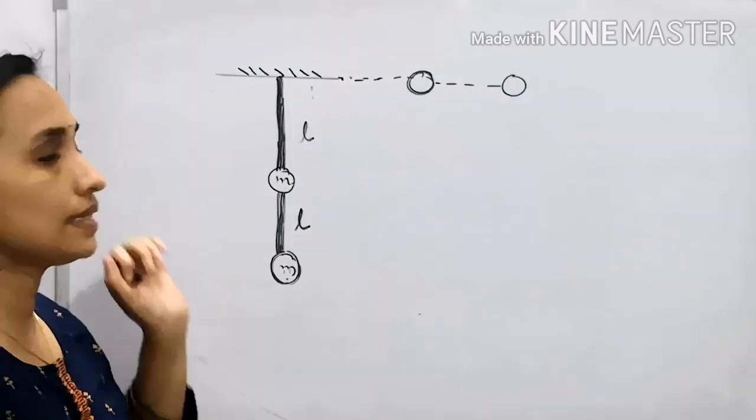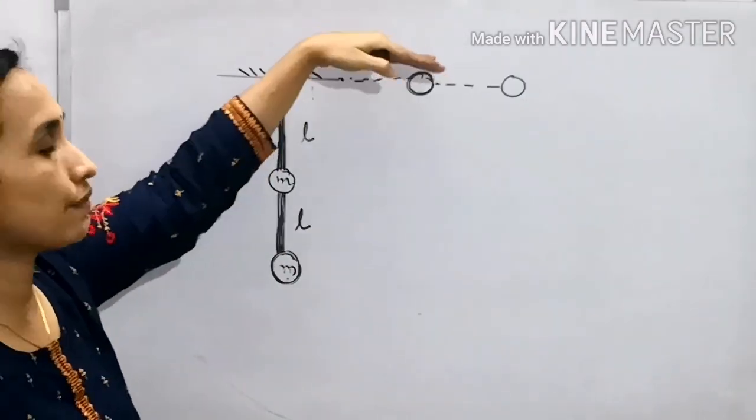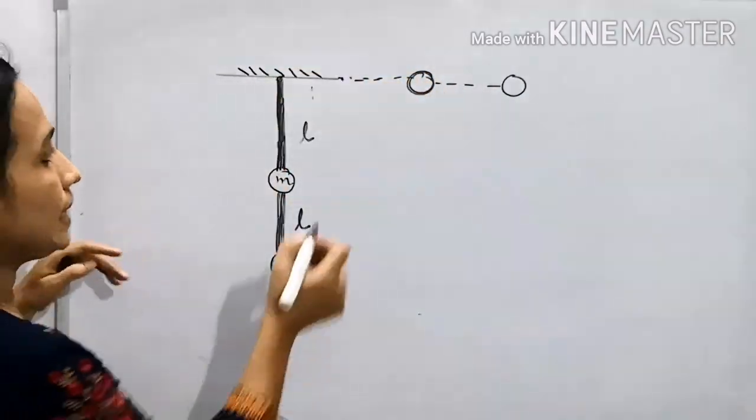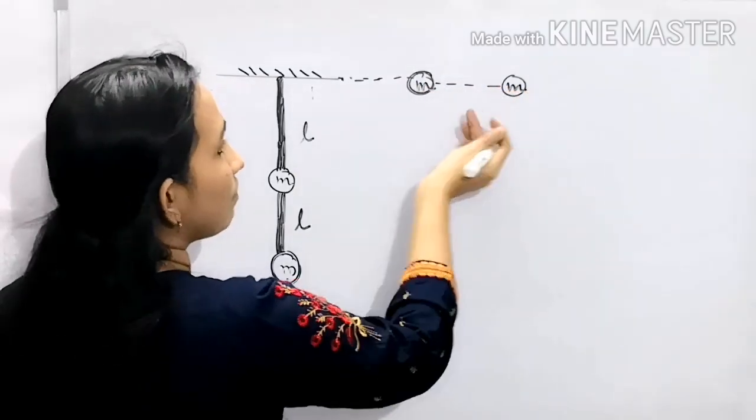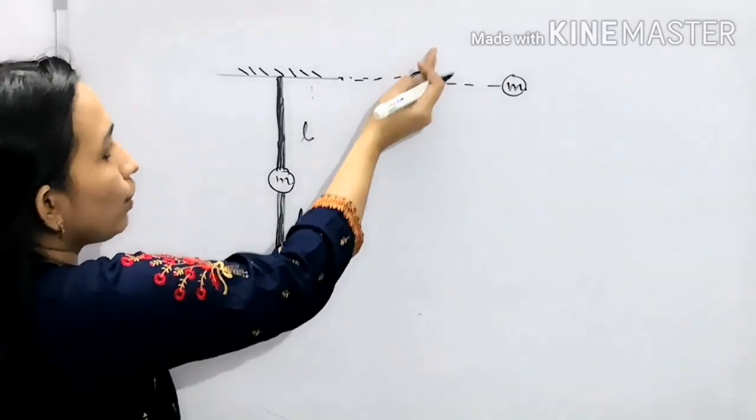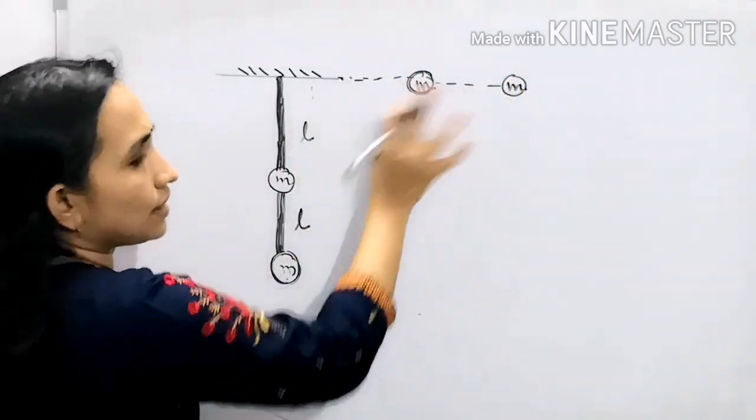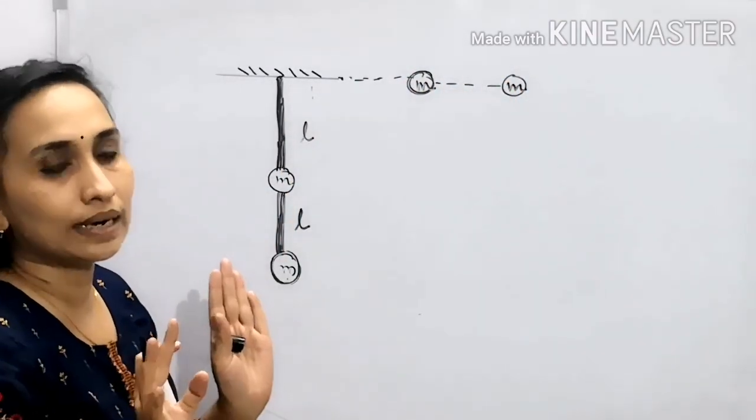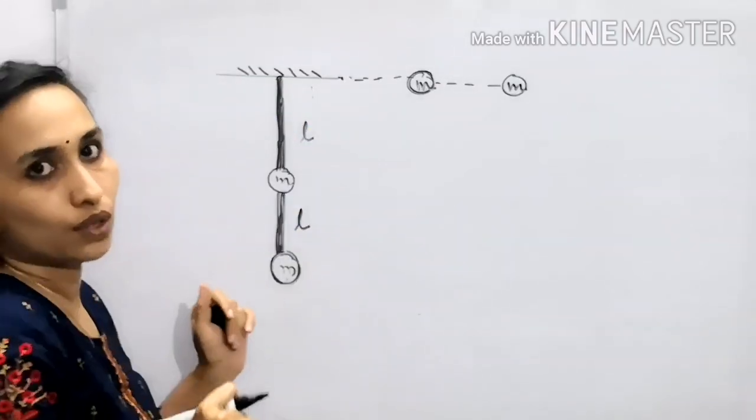Let's consider the situation. Initially it is released from this position. When it is released, Mg is acting here. Due to Mg, it is moving down. Since the rod is weightless, you should not consider the rotational energy of the rod here.